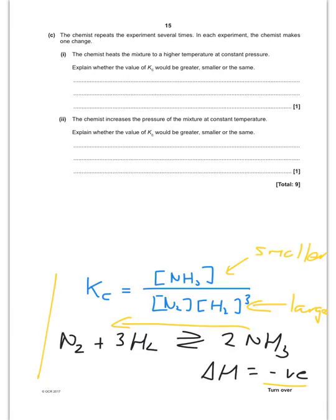The chemist increases the pressure of the mixture. What will happen to Kc? Kc will stay the same. Kc is only dependent on temperature. It is not changed by pressure.